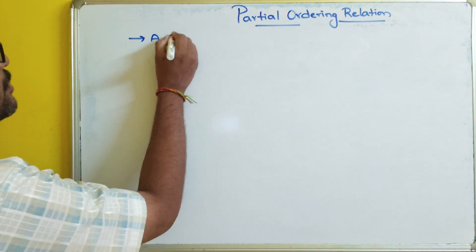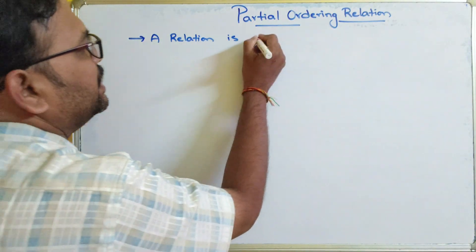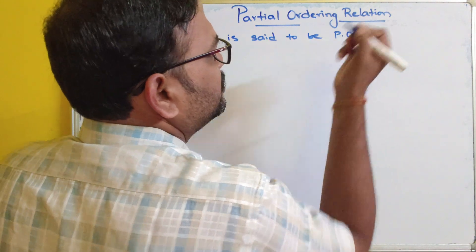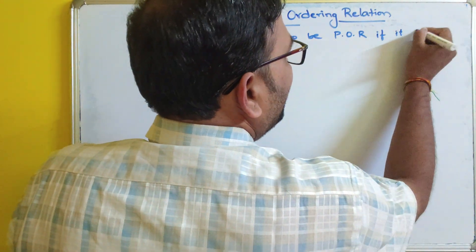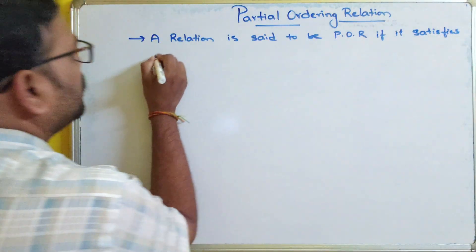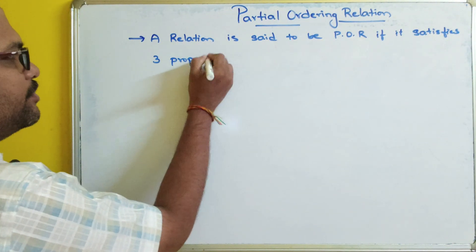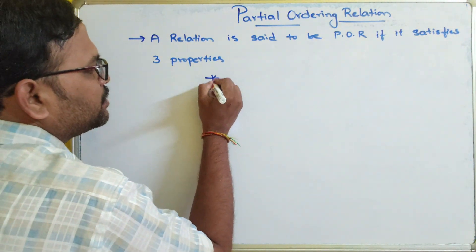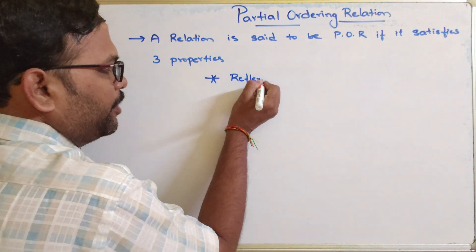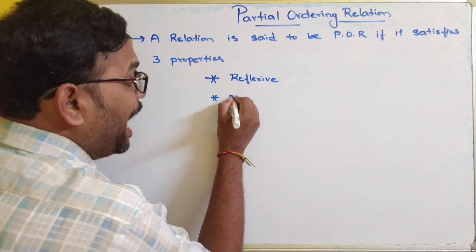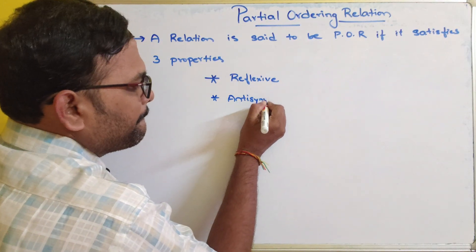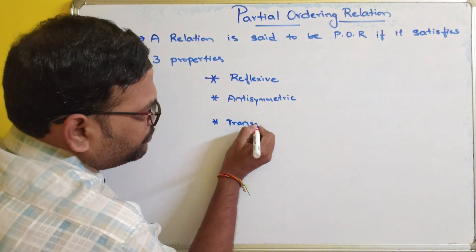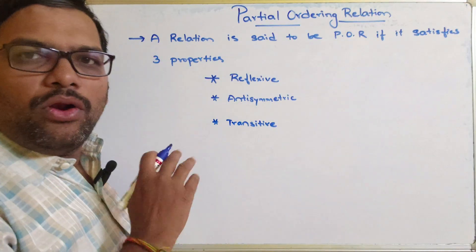A relation is said to be a partial ordering relation if it satisfies three properties. We will see those properties first and then solve an example. The first property is reflexive, the second is antisymmetric, and the third is transitive.